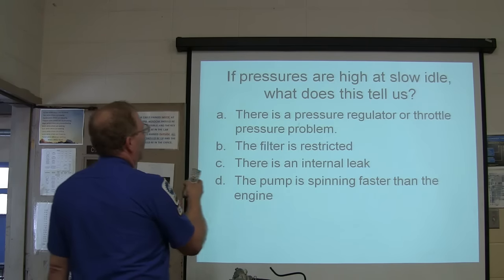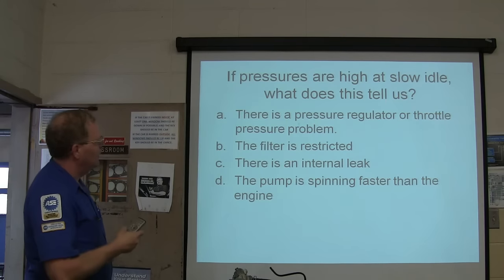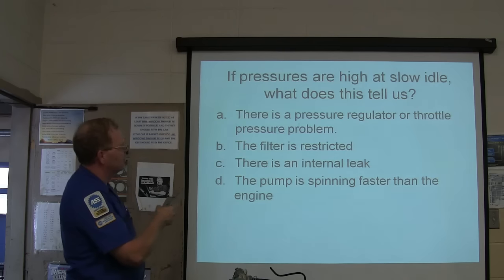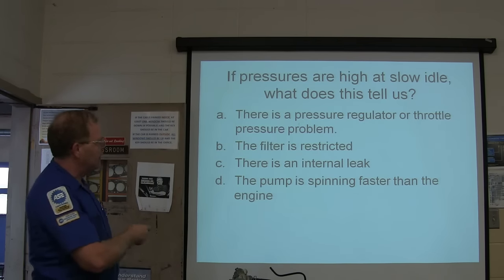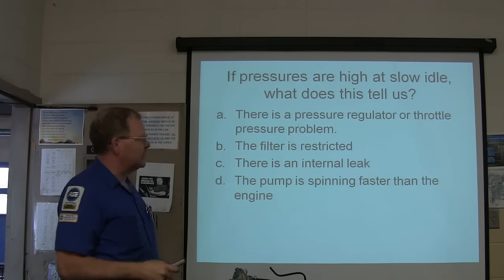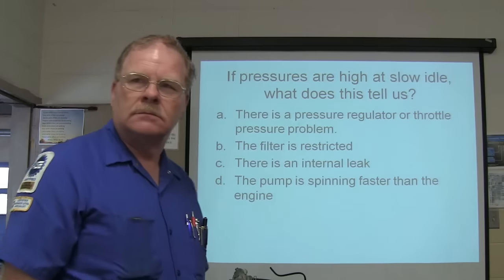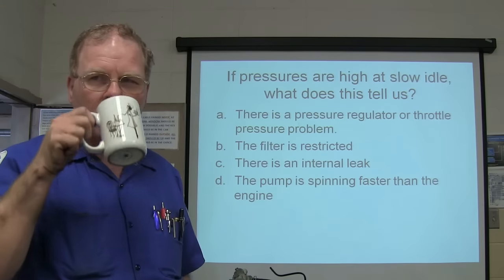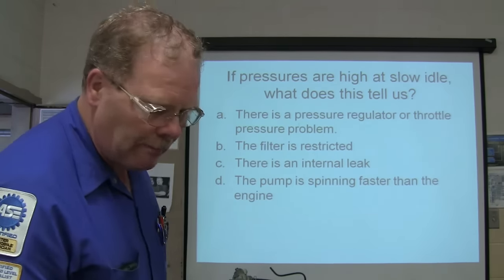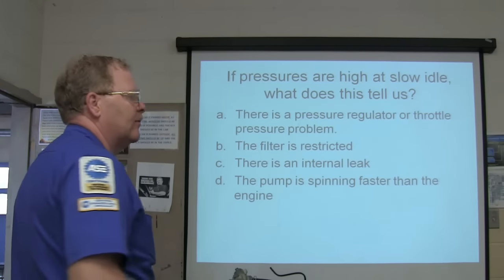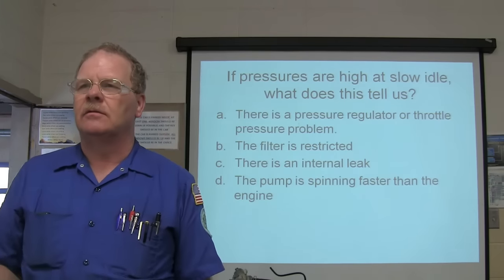If pressures are high at slow idle, what does this tell us? A — there's a pressure regulator or a throttle pressure problem. B — the filter's restricted. C — there's an internal leak. Or D — the pump is spinning faster than the engine. Your best answer. This test will be graded before we leave this classroom today by somebody that may not even like you very much. Your peers.